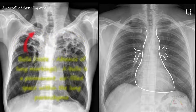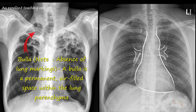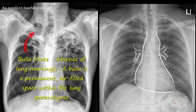A bulla is a permanent air-filled space within the lung parenchyma, which is at least one centimeter or bigger in size, and has a thin or poorly defined wall. It is bounded by remnants of alveolar septa and/or pleura.